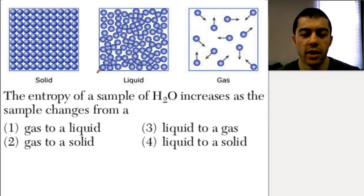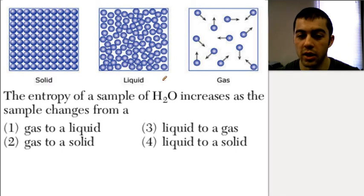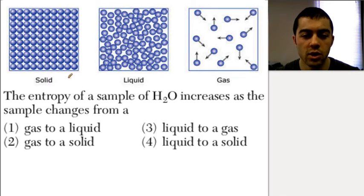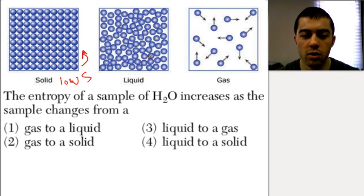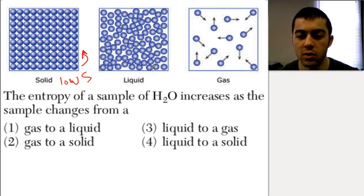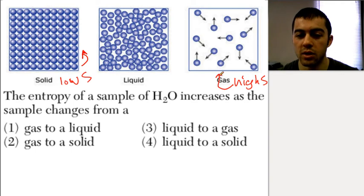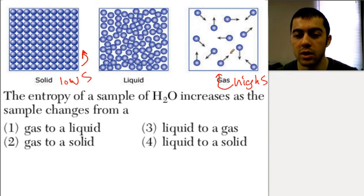In terms of phases, you want to be able to identify the entropy of each phase relative to the others. Looking at solid, liquid, and gas: solid is the most structured phase, the most rigidly arranged, so solid has the lowest entropy. Liquid is a little more unstructured — particles are freer to move — so liquid has slightly higher entropy than solid. Gas is the most unstructured, disordered, and random phase, so gas has the highest entropy because particles are really free to move around with a lot more freedom of motion.